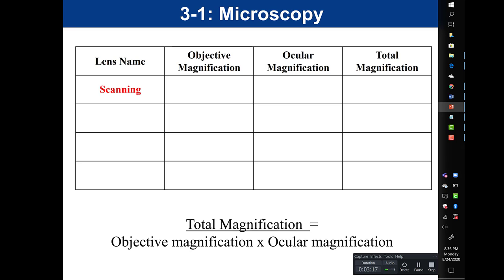Our smallest lens is called the scanning lens because it is the lowest power, meaning it is the most zoomed out. We always want to start with the scanning lens because it allows us to see a greater field of view, making it easier to find our specimen. The scanning lens is a 4x objective, magnifying the image 4 times. The ocular lens magnifies 10 times — this is consistent throughout. So our total magnification using the scanning lens is 4 times 10, which equals 40x.